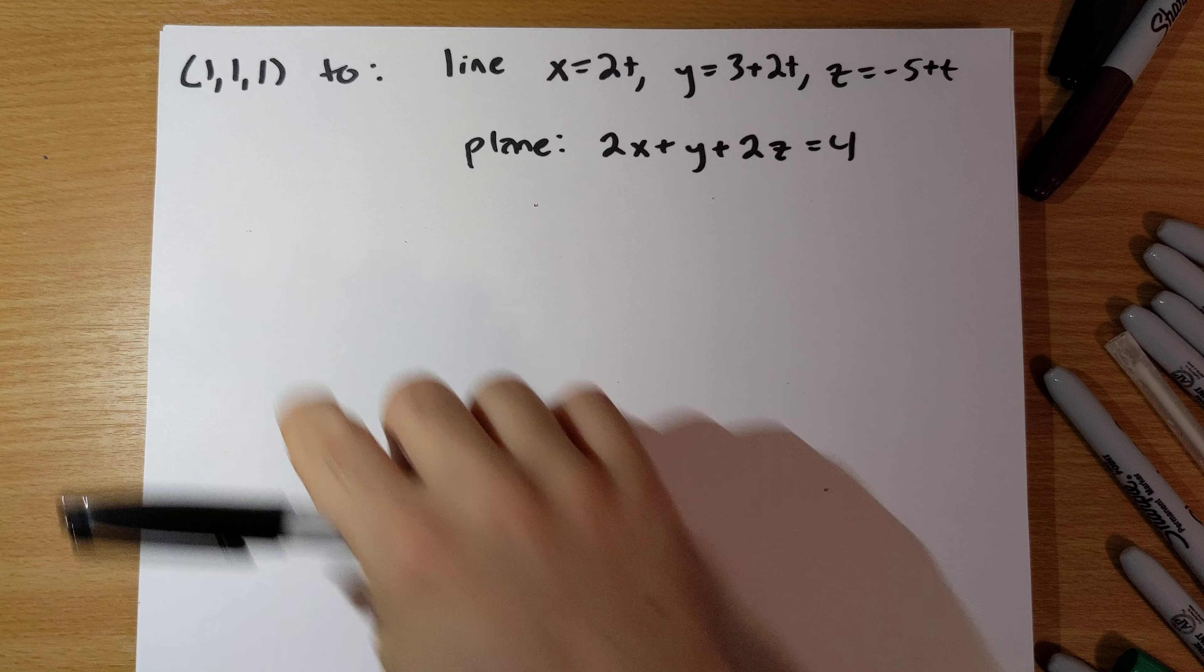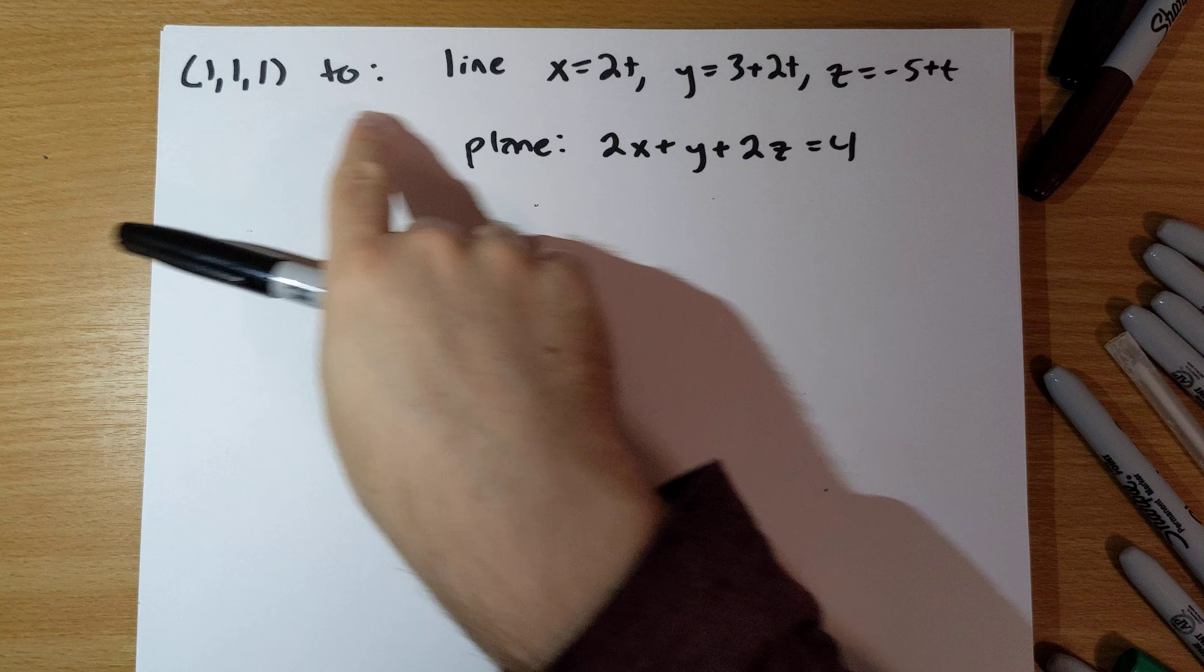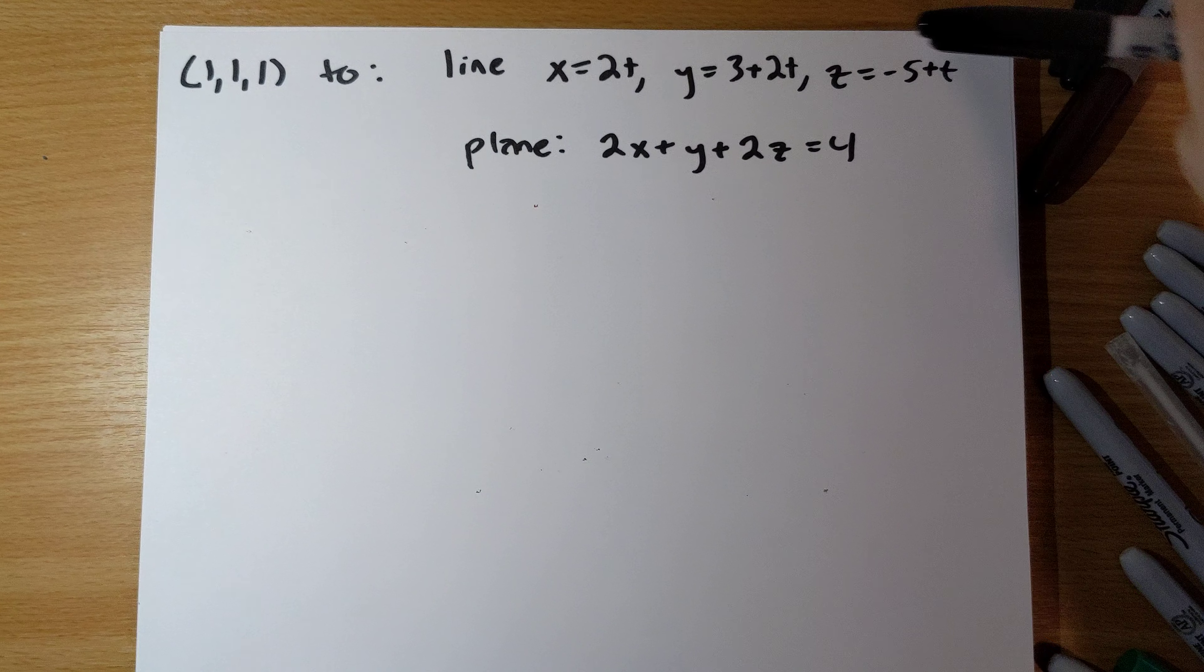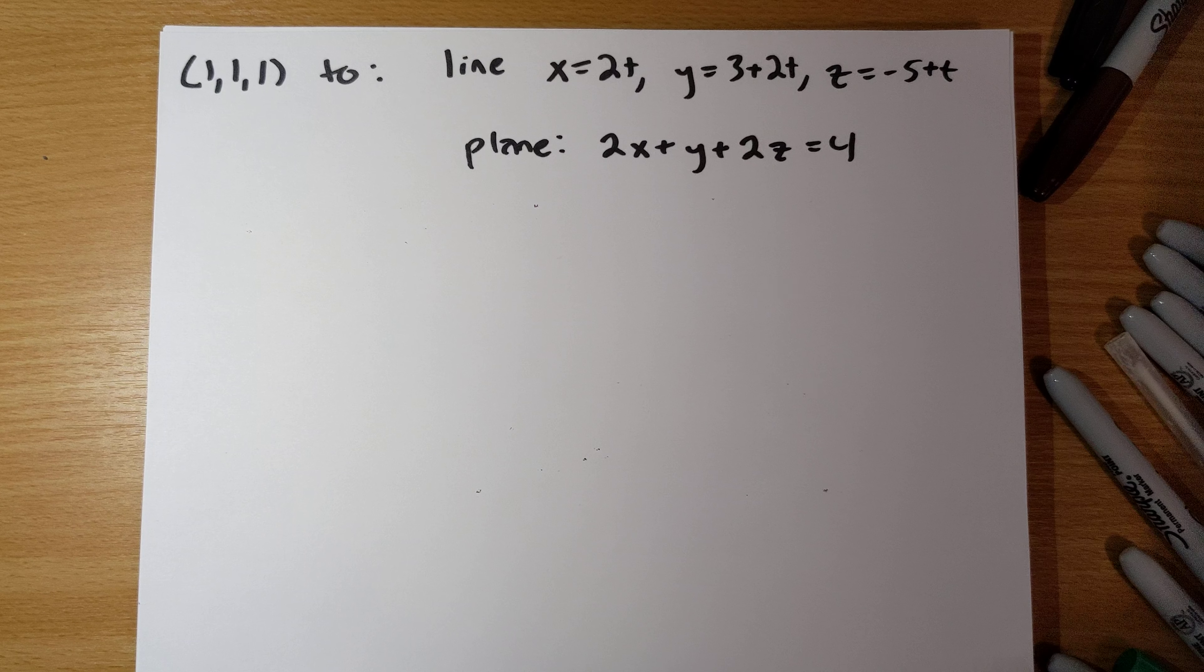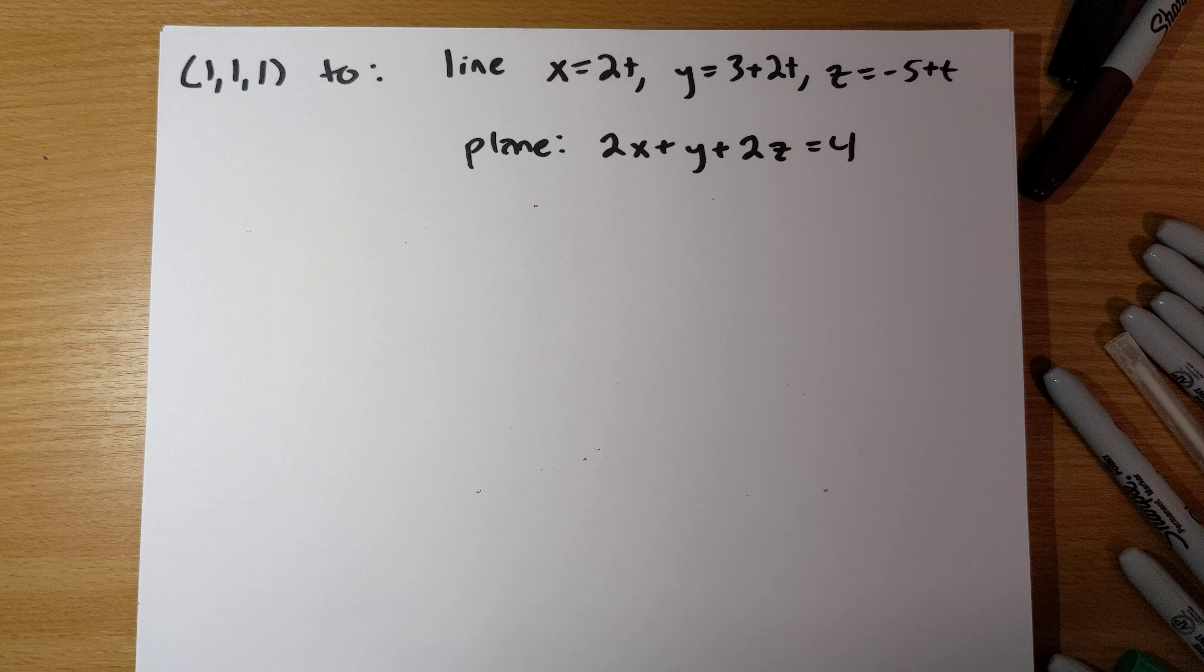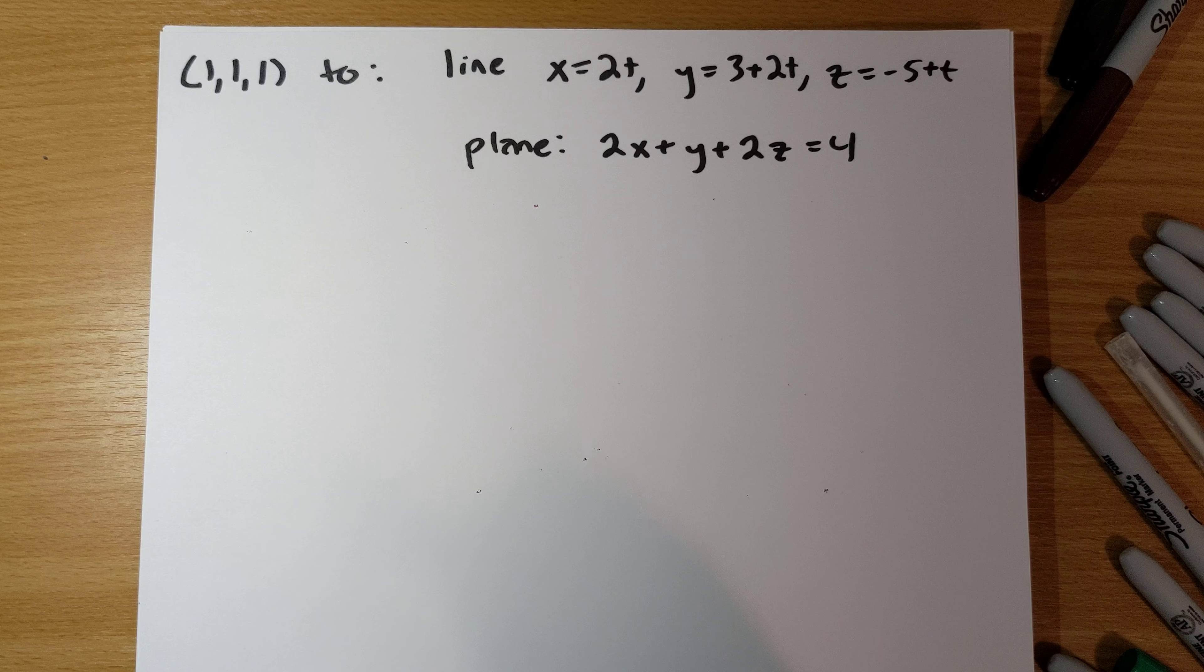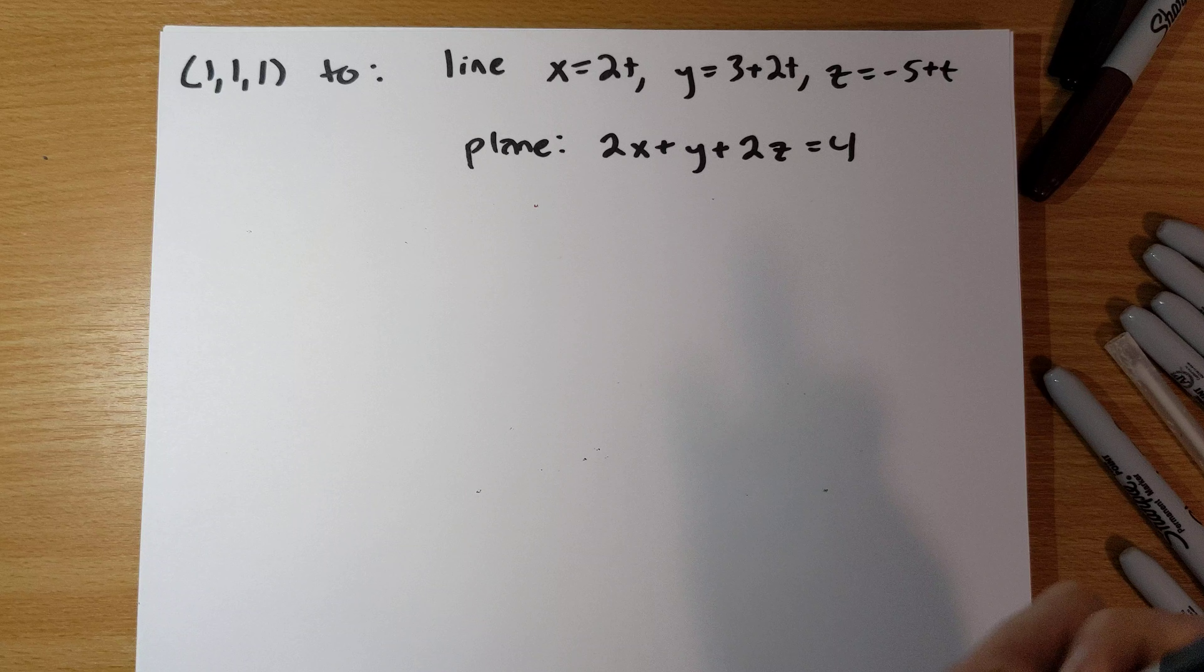Problem number 19. Find the distance from the point (1,1,1) to the line x equals 2t, y equals 3 plus 2t, z equals negative 5 plus t, and the plane 2x plus y plus 2z equals 4.